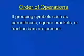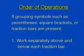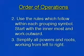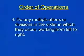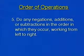Now let's look at the guidelines for the order of operations. If grouping symbols such as parentheses, square brackets, or fraction bars are present, work separately above and below each fraction bar, and use the rules within each grouping symbol starting with the innermost. Then simplify all powers and roots from left to right, then do any multiplication or division from left to right, and finally do any negations, additions, or subtractions from left to right.